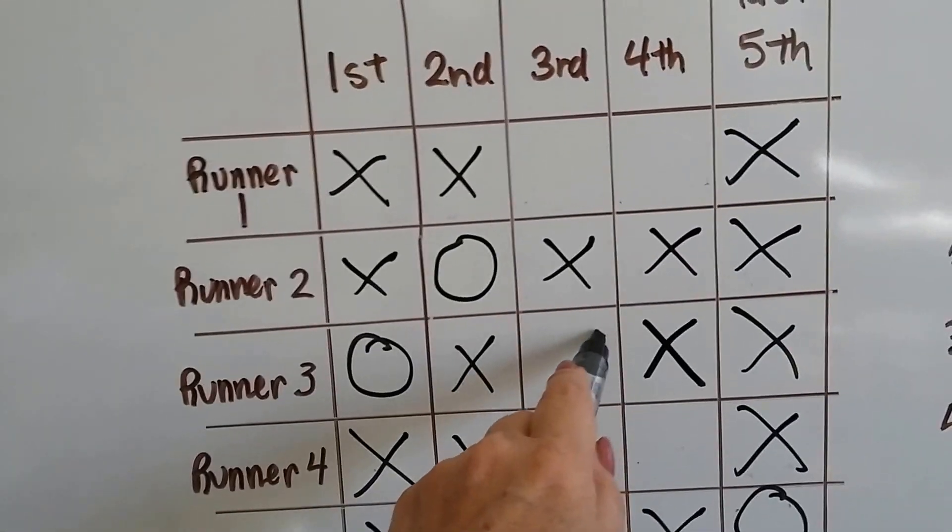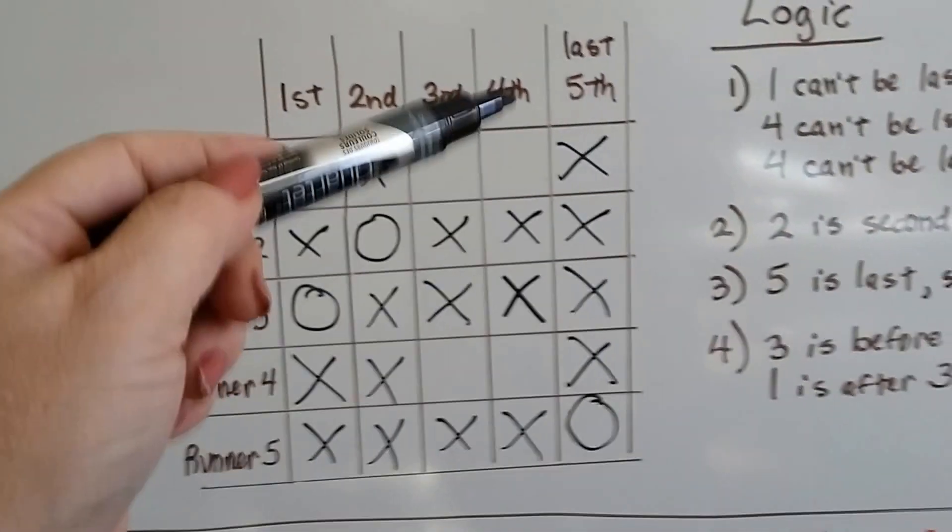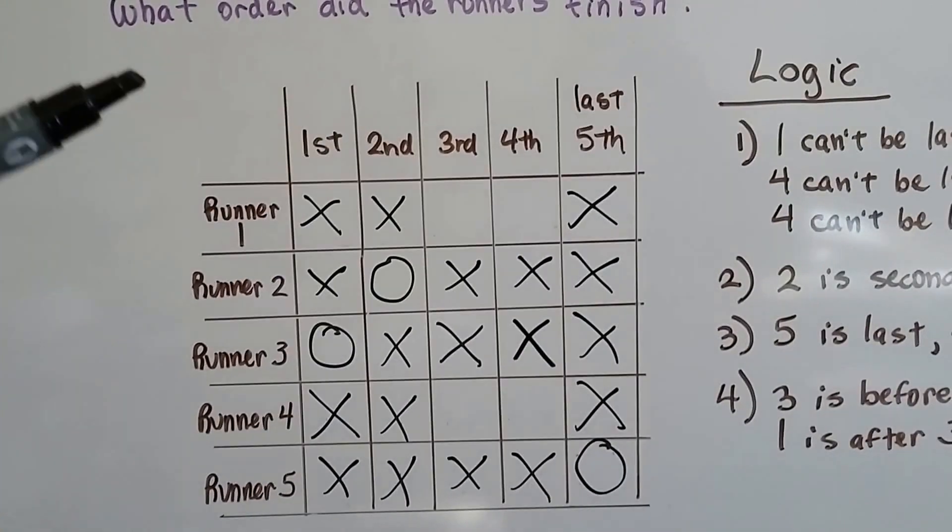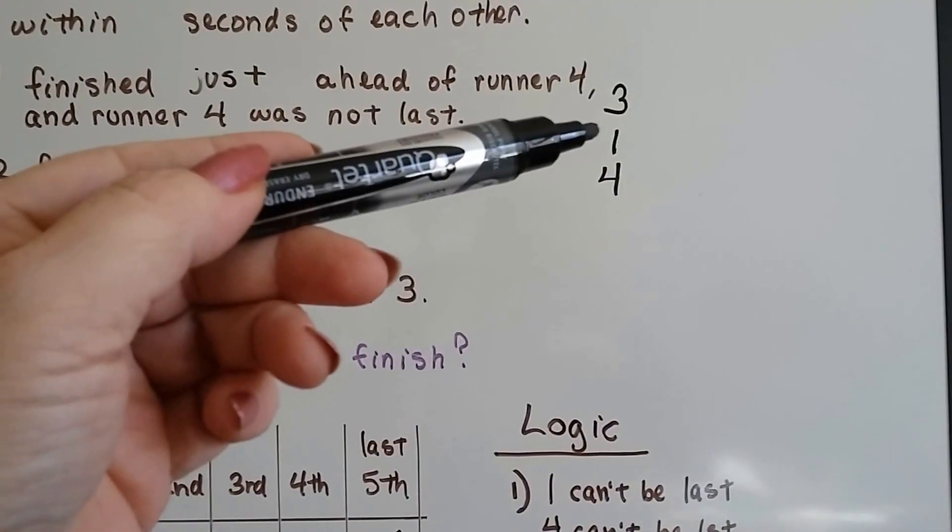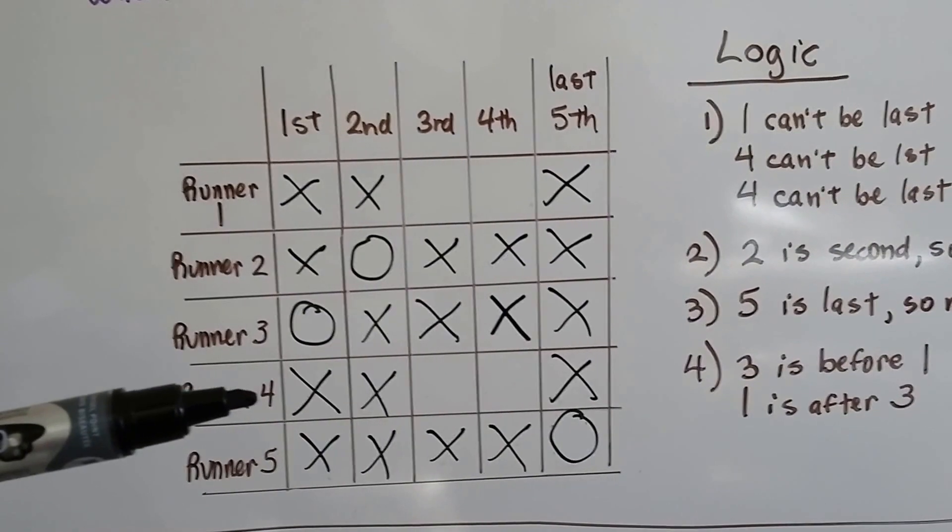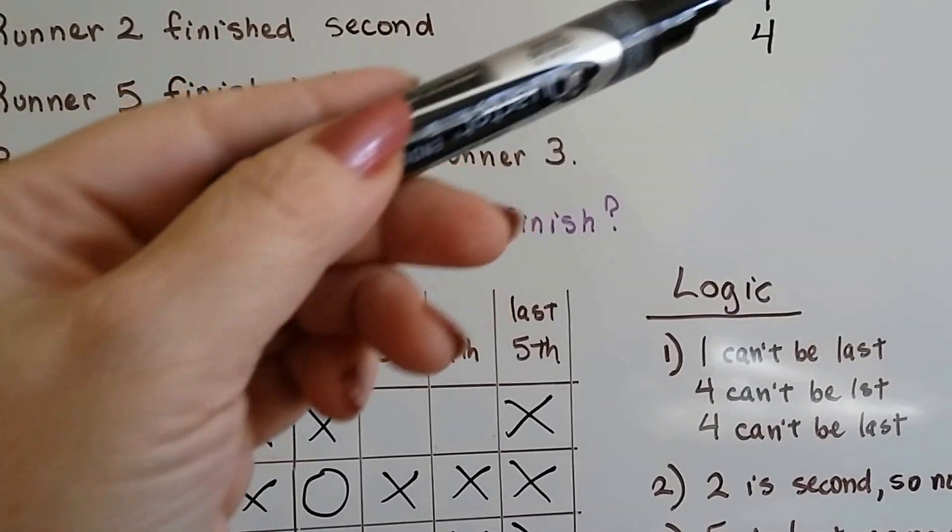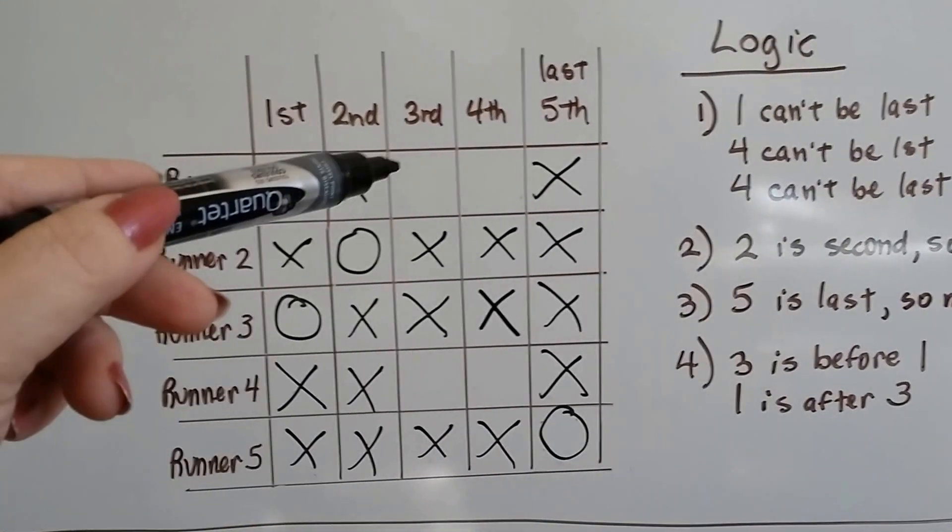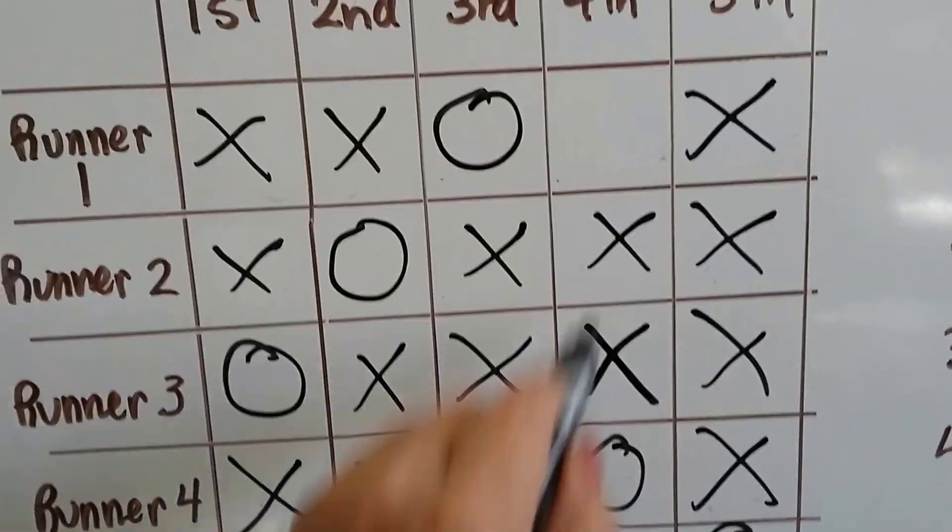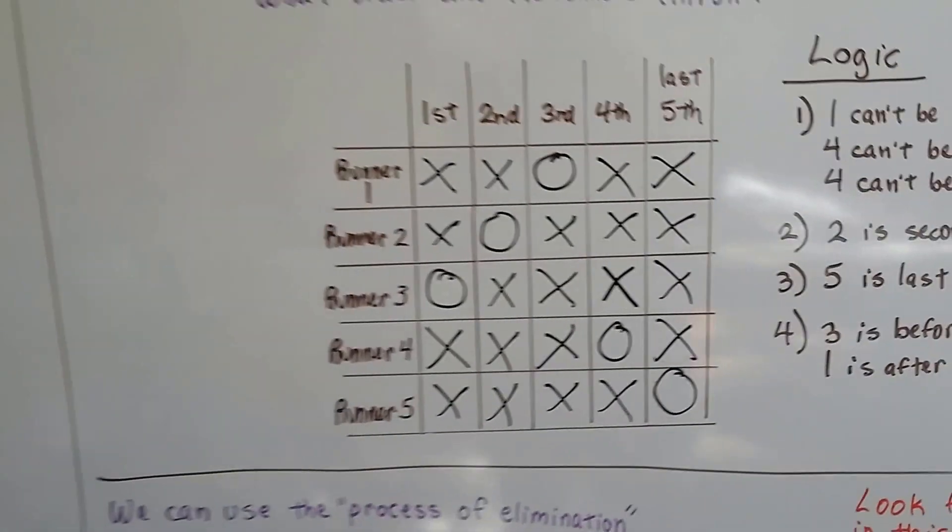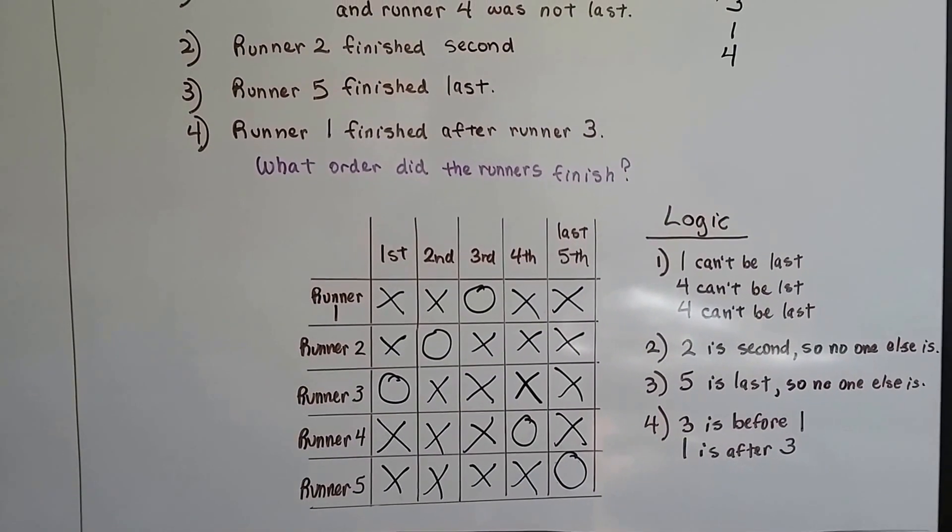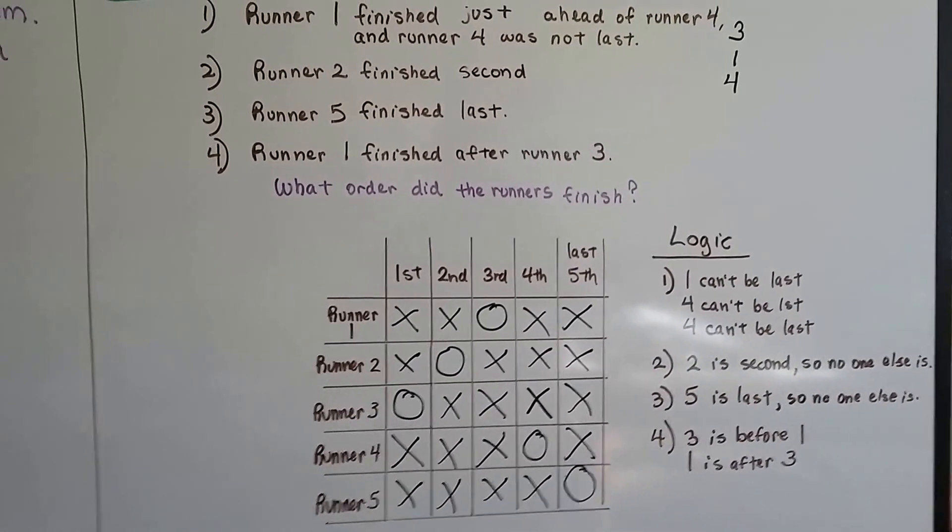We know two is second, so no one else is. We know five is last, so no one else is. And because runner number one finished after runner number three, we know three is before the one and the one is after the three. So can runner one be in first place? Nope, because it says he finished after runner three. So the only thing left for first place has got to be runner number three. And if he's in first place, he's not in third place. So now we've only got two left to figure out. All we know is that we've got third and fourth place and runner one and runner four left. But runner one came in before runner four. So if our choices are between third and fourth place for runner one and runner four, we know that runner one came before runner four. So runner one has to be this one and runner four has to be this one.